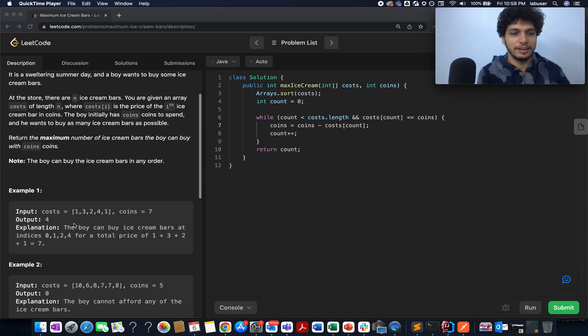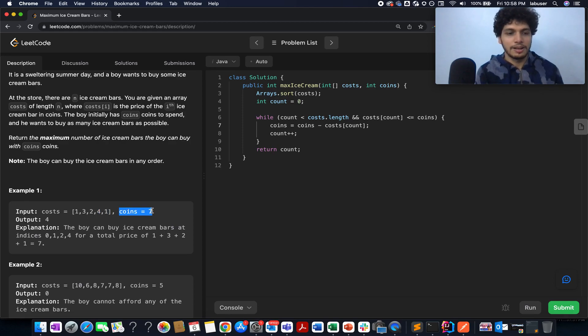For example, here you are given five ice cream bars. The cost of each ice cream bar is specified: the first one is $1, the second one is $3, the third one is $2, the fourth one is $4, and the fifth one is $1. The total money that you have is $7. You need to identify how many maximum ice creams you can buy. You can buy the first one, this one, this one, and this one. In total, you can buy four ice creams and this is what the question expects us to return.